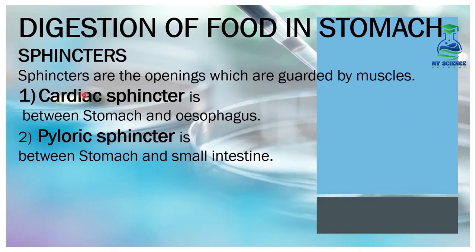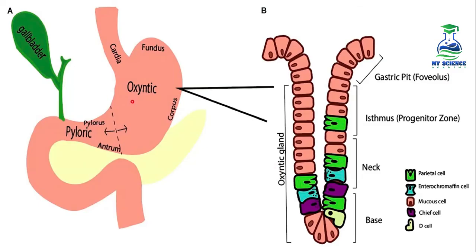Next are the sphincters. Sphincters are openings which are guarded by muscles. There are two sphincters: one is the cardiac sphincter, located between the stomach and esophagus, and the second is the pyloric sphincter, located between the stomach and small intestine. In the diagram, we can see that the cardiac sphincter connects the esophagus to the stomach, and the pyloric sphincter connects the stomach to the small intestine.